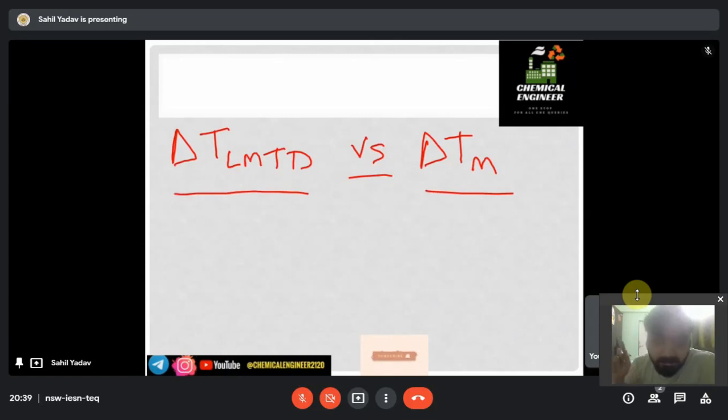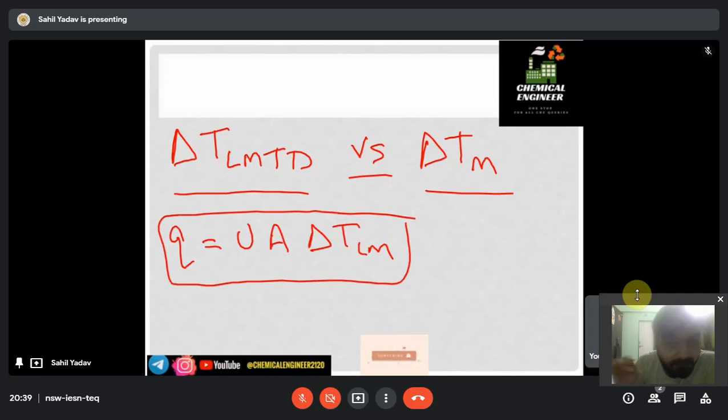So you may remember that Q = UA ΔTlm. This is the equation that we have used. So you will be asked in your interviews why we have used this equation and why we have used ΔTlm in place of ΔTm.